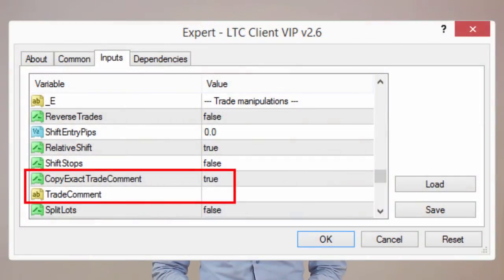5. Advanced trade comment copying. I have added new option to the client EA called copy exact trade comments. By default it is enabled and it means trades will be copied with the exact same trade comment as it appears in the master account. If you disable this option, the client EA will allow you to use the trade comment option which was upgraded significantly.